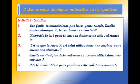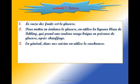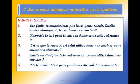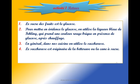Est-ce que le sucre X est celui utilisé dans nos cuisines pour sucrer nos aliments ? En général, dans nos cuisines, on utilise le saccharose. Le saccharose est originaire de la betterave ou de la canne à sucre.